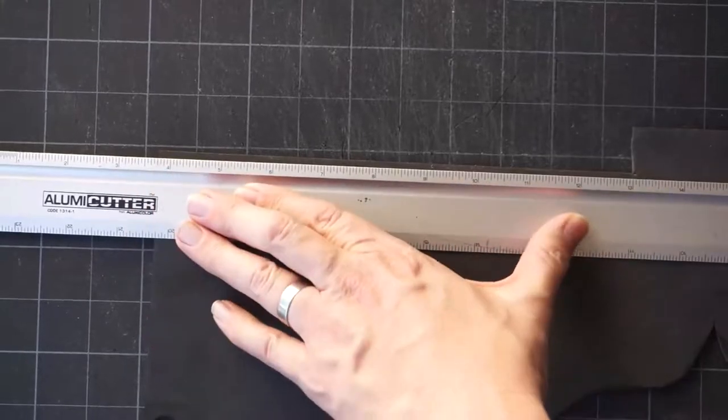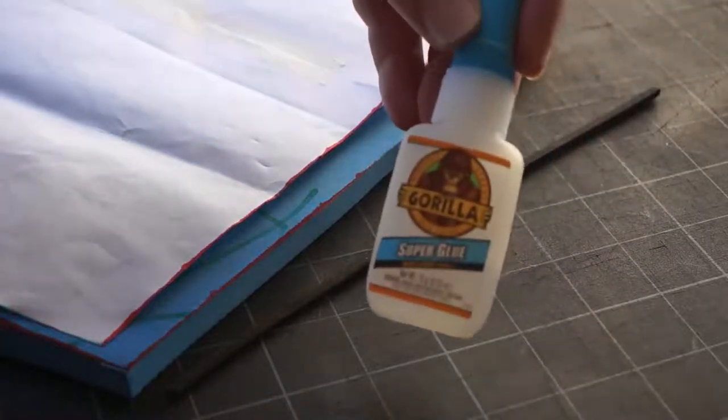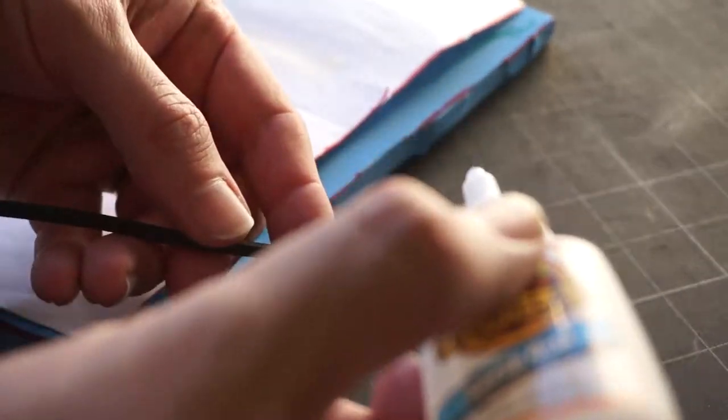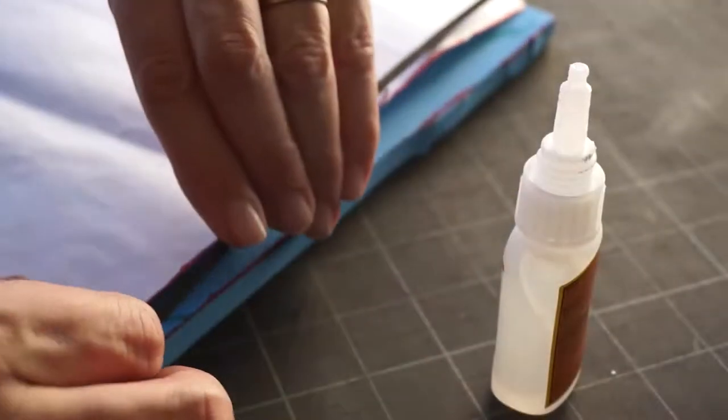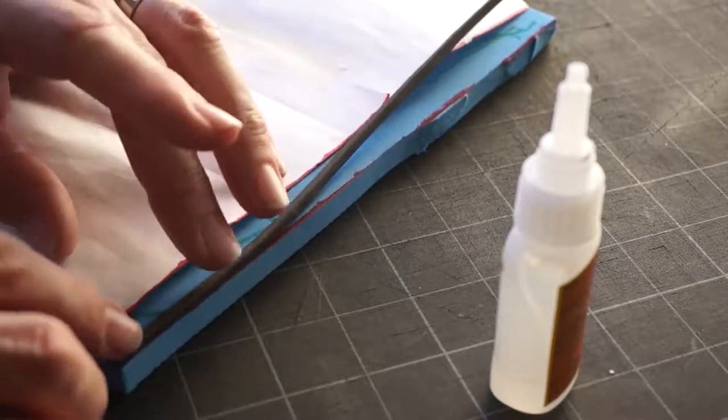Using a thinner foam I cut a 1/8 inch foam strip. I used super glue to attach this strip to the top and bottom edge of the bracer to add a small detail. I found it easier to only glue 2 or 3 inches down at a time before gluing the next section.